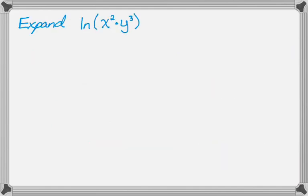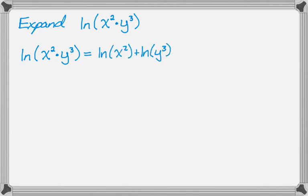Now let's do a couple of examples. The first thing I want to do is expand the natural log of x squared times y cubed. The first step is to make it the natural log of x squared plus the natural log of y cubed. There are restrictions I need on x and y, but I'll gloss over those. Here we've used the rule that multiplication inside becomes addition outside.